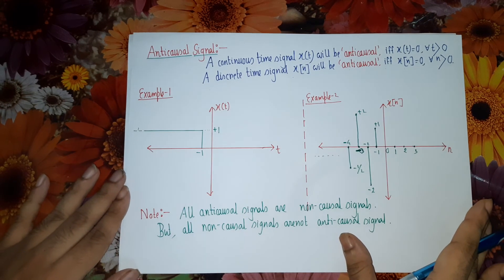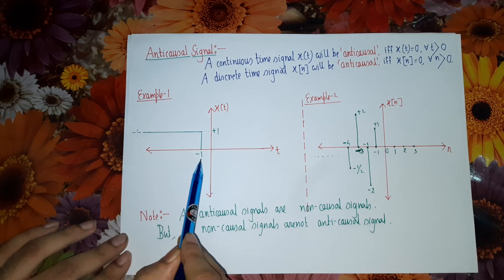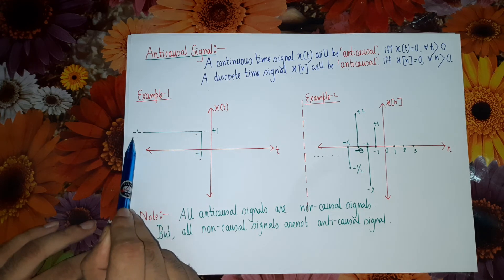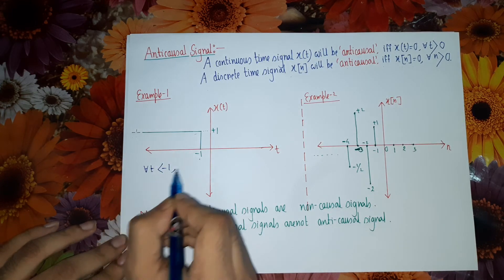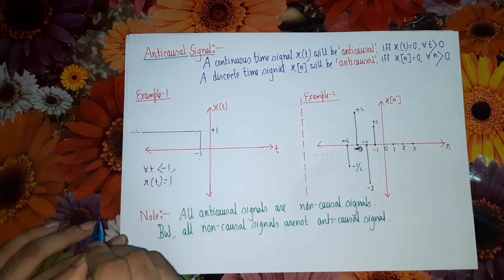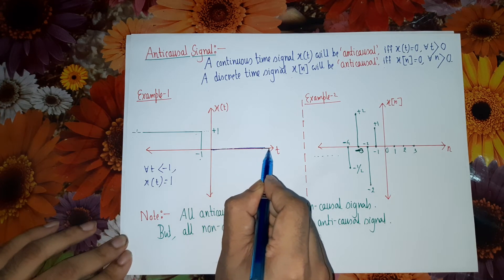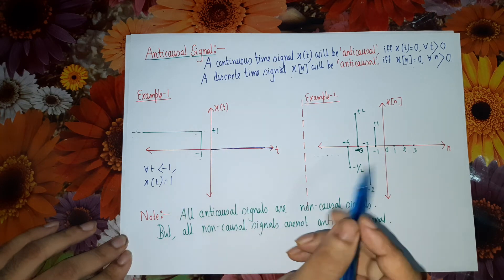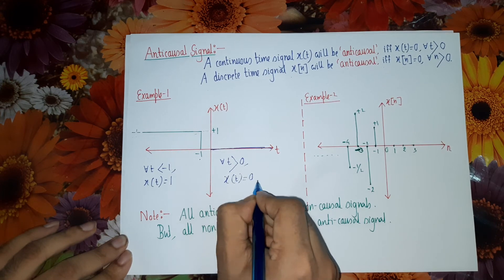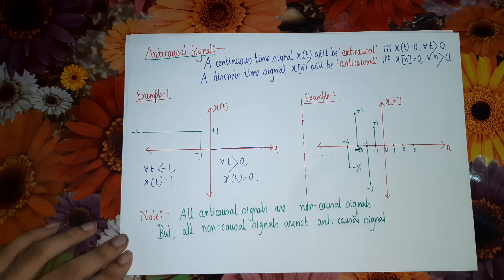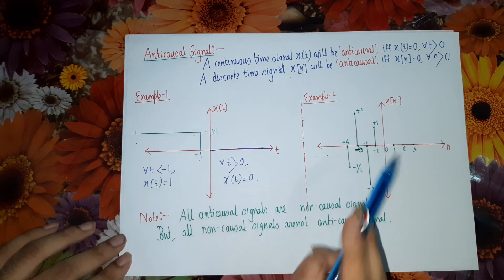Let us look at example 1 for a better understanding. You observe the waveform of the signal x(t): it starts at t equal to minus 1 and moves towards the left. For all values of t less than minus 1, the value of x(t) is a constant 1. Looking at the positive time axis, at every possible time instant, the value of x(t) is 0. Since x(t) is 0 for all t greater than 0, clearly this is an anti-causal signal. The complete waveform lies in the negative time axis and no portion lies in the positive time axis.